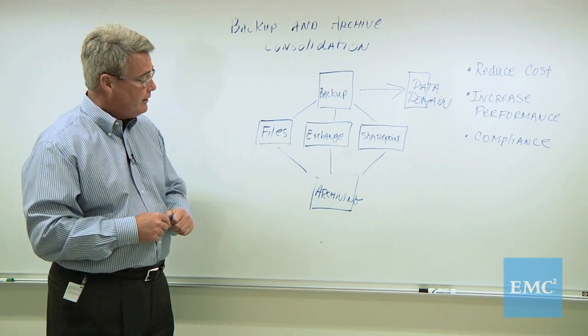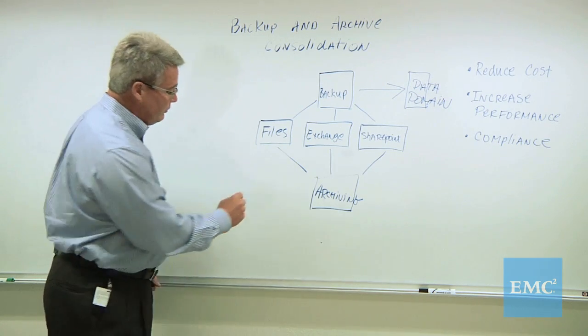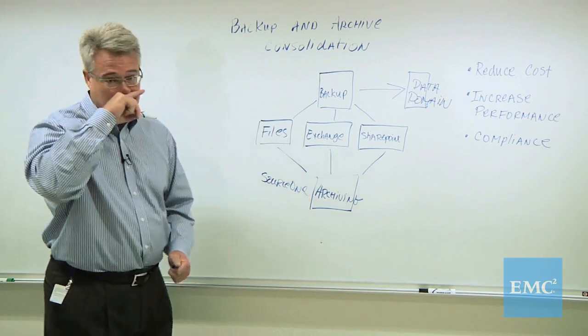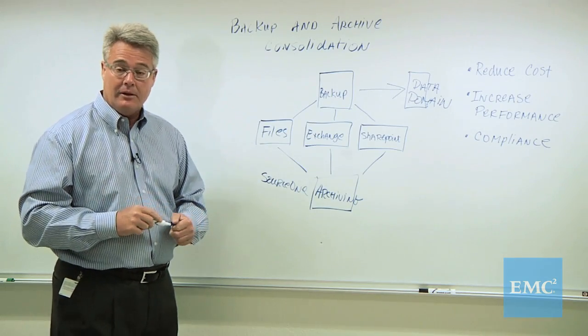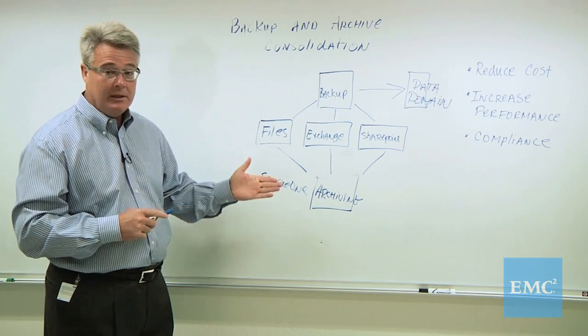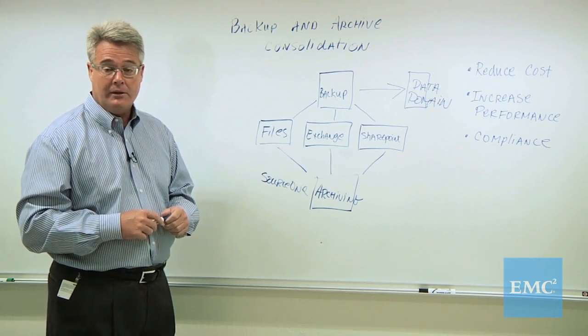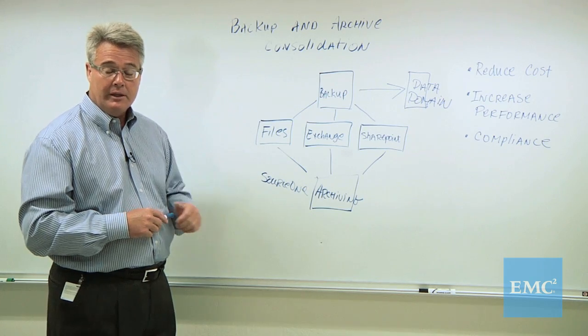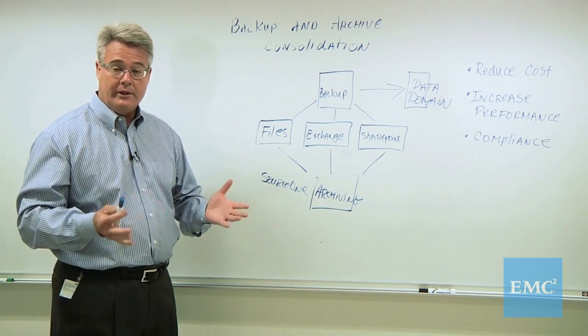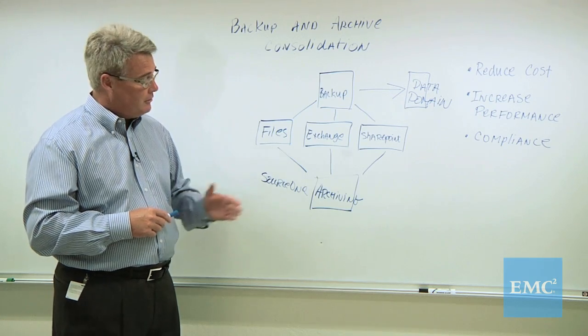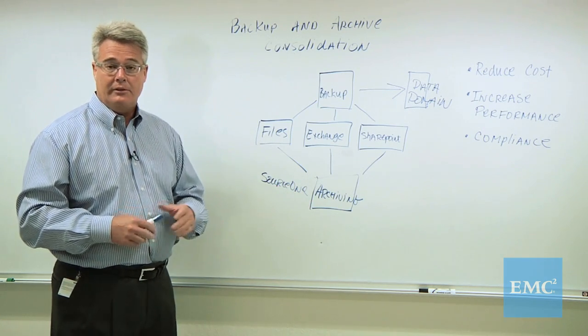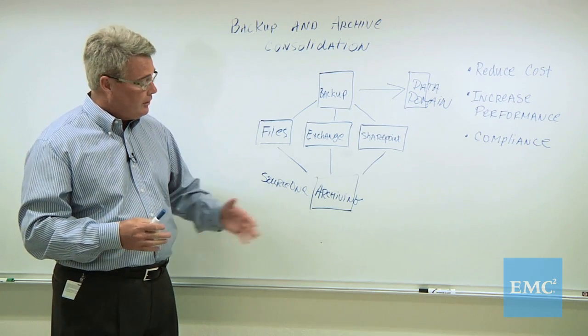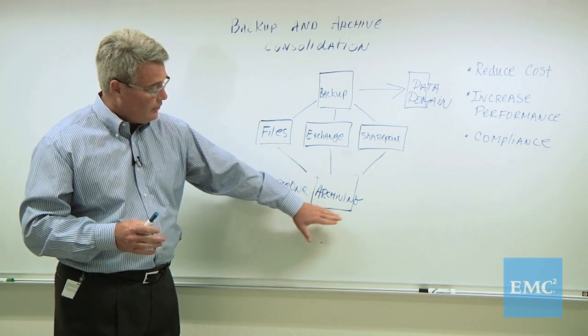Now EMC makes a very fine archiving solution called Source 1. But you perhaps may have other archiving applications, and what I'm going to describe to you here in a minute, applies equally to Source 1 and other archiving applications. Underneath your archiving server, you will have high speed storage for your indexes and your SQL database. But the majority of your storage under archiving will be under general purpose storage of just about any type that you would want to put here for your second tier of storage.